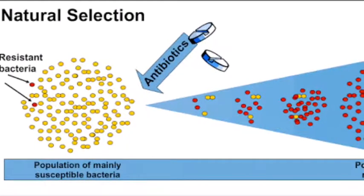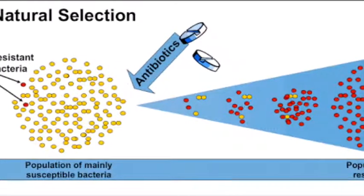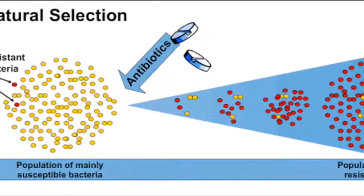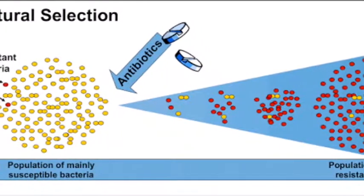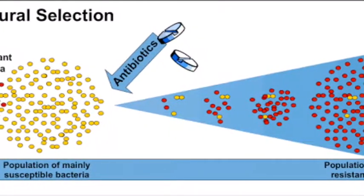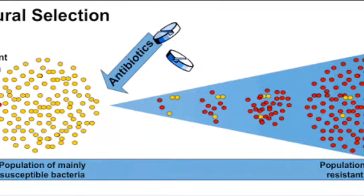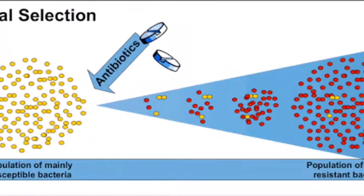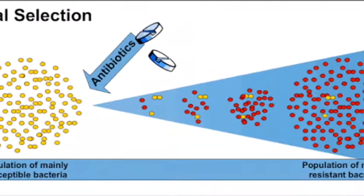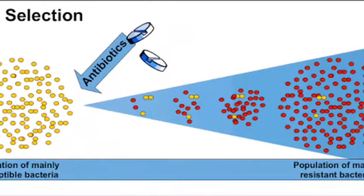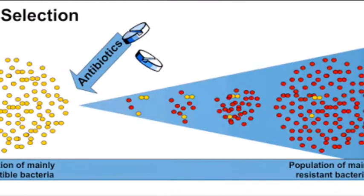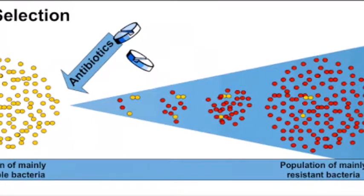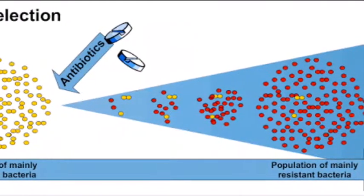Mutations in the DNA of a single Staphylococcus aureus allowed it to survive the antibiotics — we call this a resistant bacteria. Because that specific antibiotic couldn't kill this bacteria, it reproduced and spread rapidly. This is where natural selection kicked in, allowing the organism with a genetic advantage to survive and reproduce.